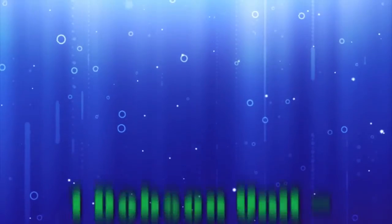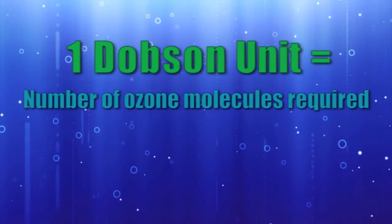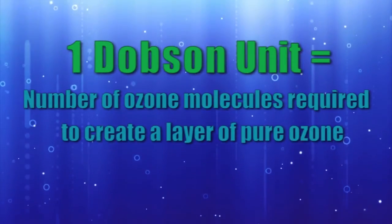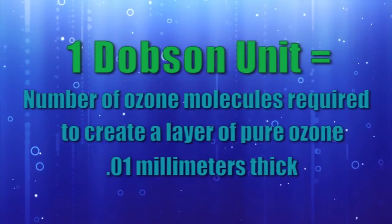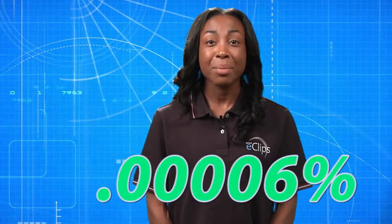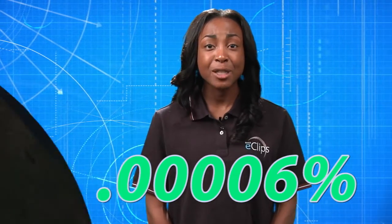In order to understand how ozone might be changing, it needs to be measured. The most common unit for measuring ozone is called the Dobson unit. One Dobson unit is the number of molecules of ozone that would be required to create a layer of pure ozone 0.01 millimeters thick. Ozone isn't all packed into a single layer in the Earth's atmosphere — it's dispersed throughout it. So just how do we measure something that makes up less than 600 thousandth percent of our atmosphere?